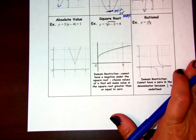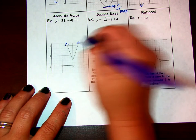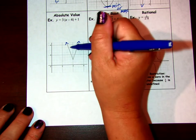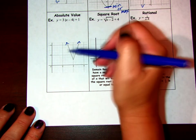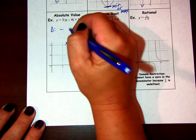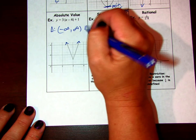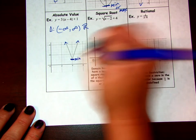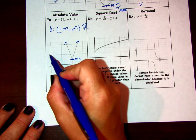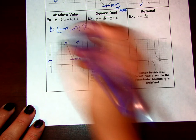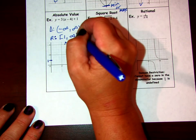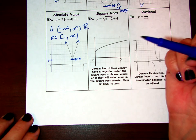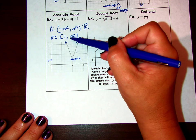For the absolute value function, which is V-shaped, it goes forever left and forever right just like the quadratic. The domain of all absolute value functions is always negative infinity to infinity, or all real numbers. But the range, just like the quadratic, is bound by the minimum or maximum vertex. In this case, looking at the graph, the minimum is at 1, so the range goes from 1 to infinity. We can also say all real numbers greater than or equal to 1.